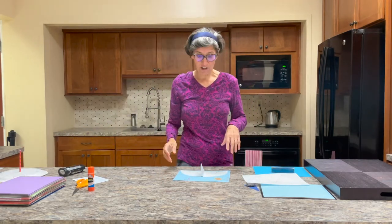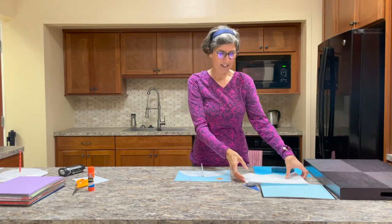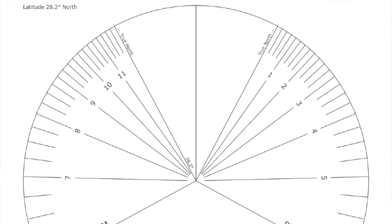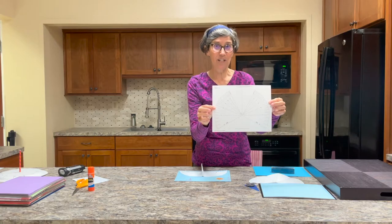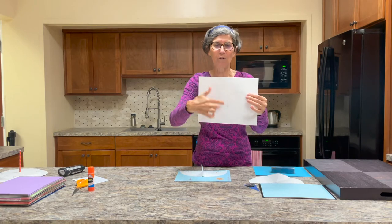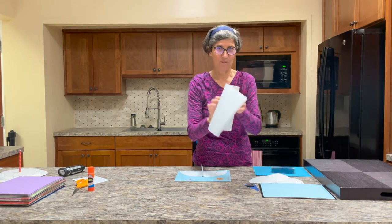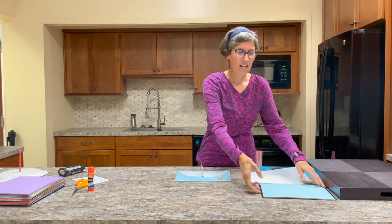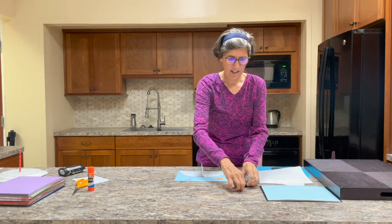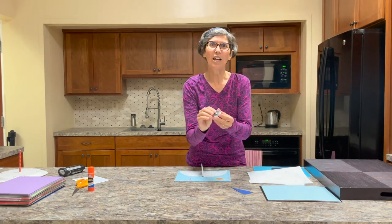The sundial that you're going to make actually works. If you come to the library, you can pick up your packet, and your packet will include this printout sundial, which is based on our latitude here in central Florida. On the back there are three extra lines drawn — your sundial, a base for your sundial, and a little triangular piece of cardboard to make the sundial stronger.